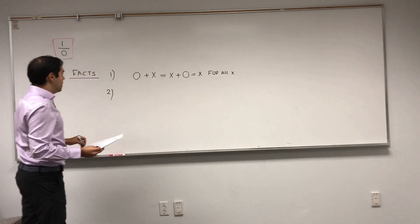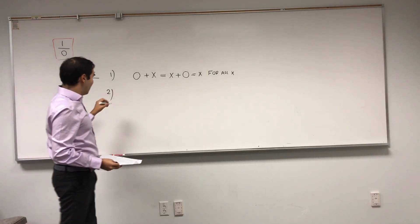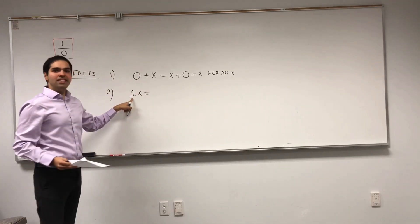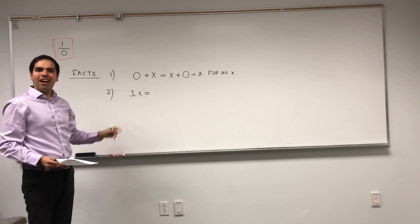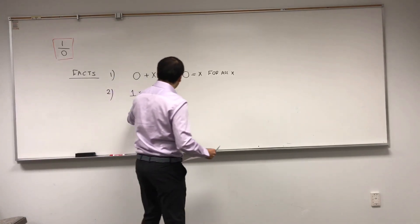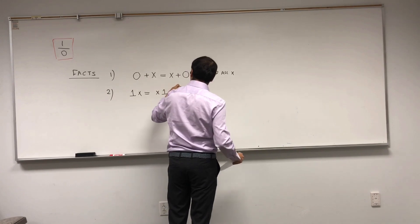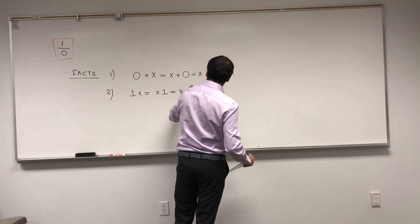And, what about 1? 1 is the same thing but with multiplication. 1 is the number such that multiplying by 1 doesn't do anything. So, 1 times x equals x times 1 equals x for all x.